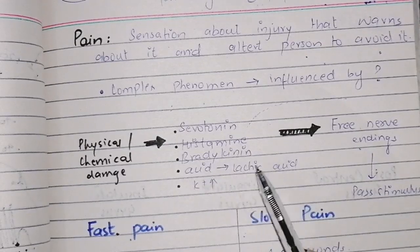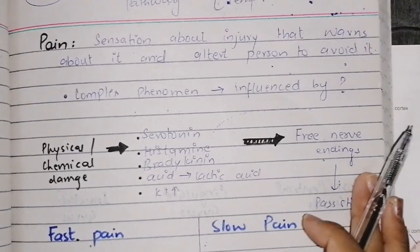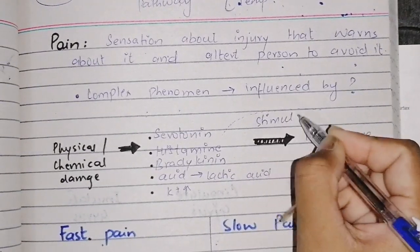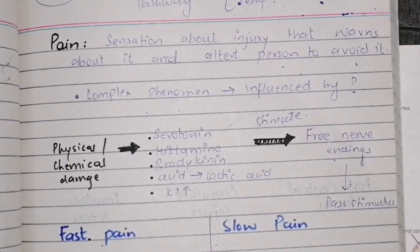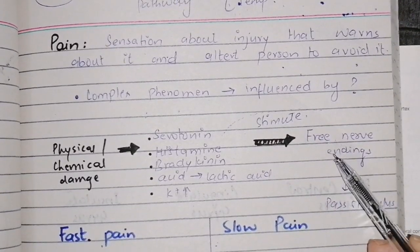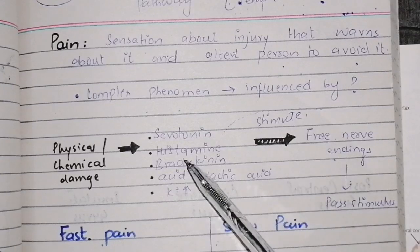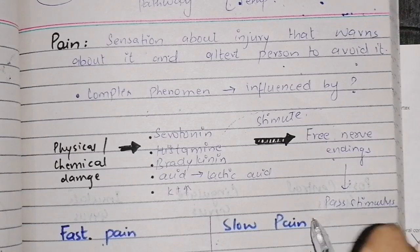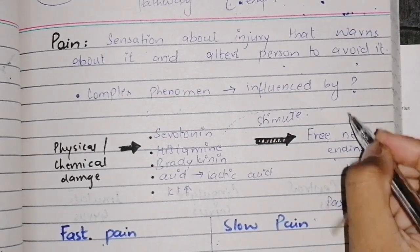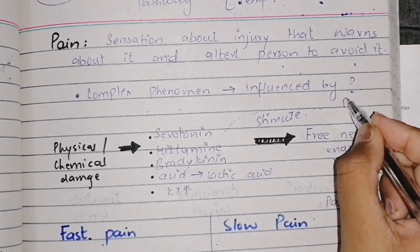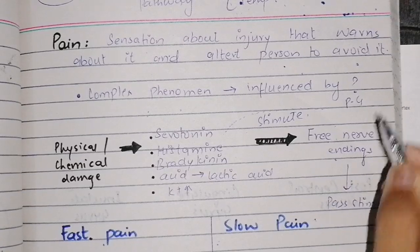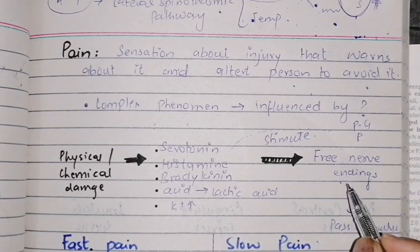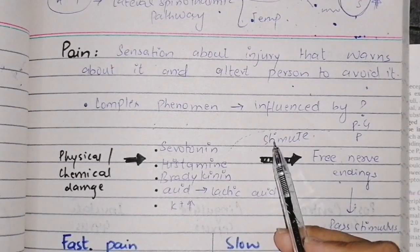When there is physical and chemical damage in tissues, these substances are released: serotonin, histamine, bradykinin, lactic acid, and potassium. These stimulate the free nerve endings. There are two other things — prostaglandin and substance P — which reduce the threshold levels so that nerve endings are more easily stimulated and they transmit the impulse.